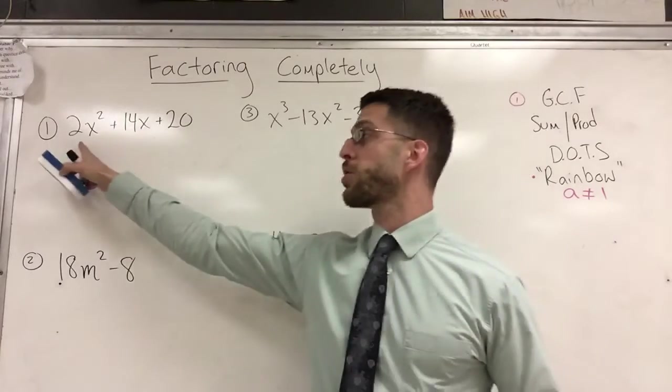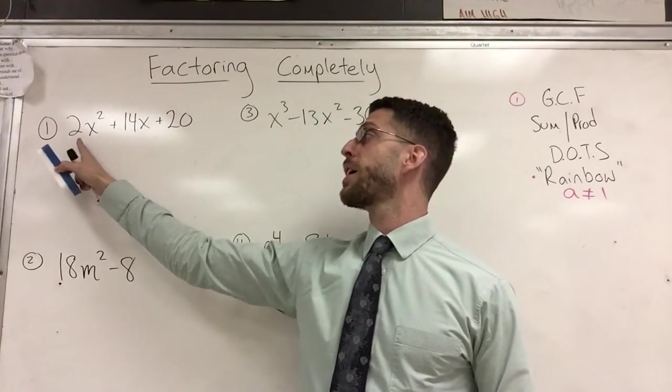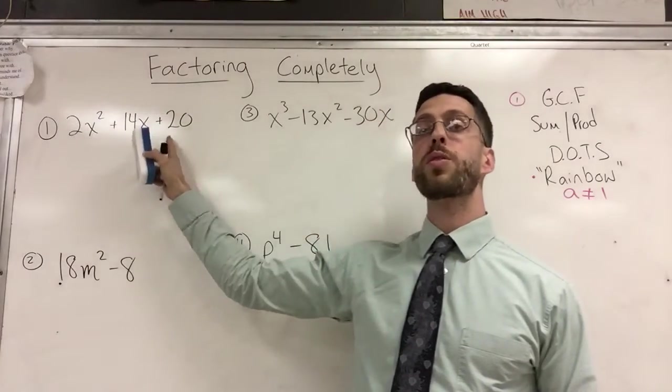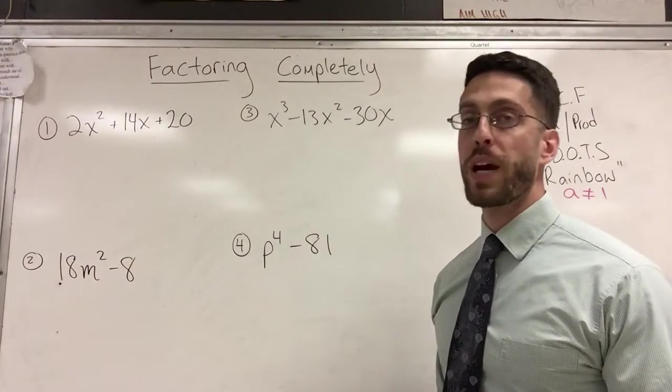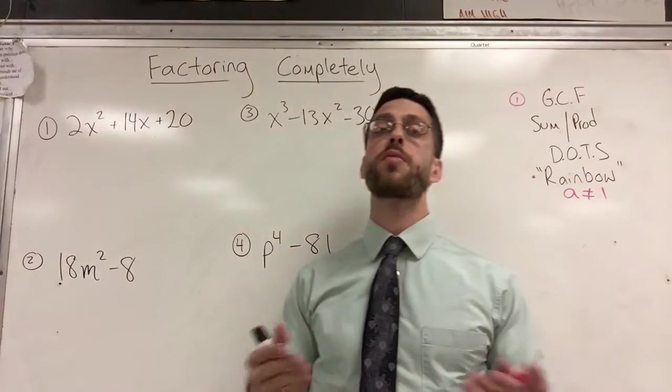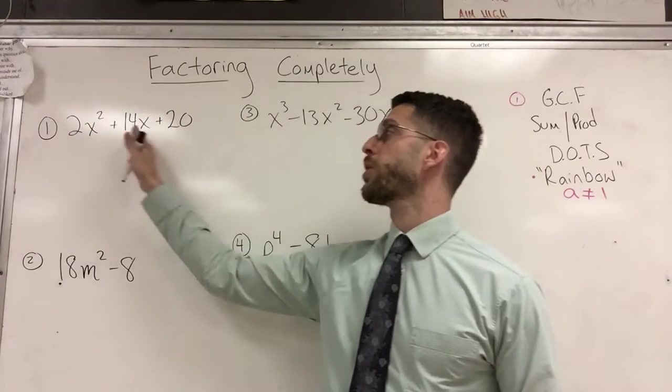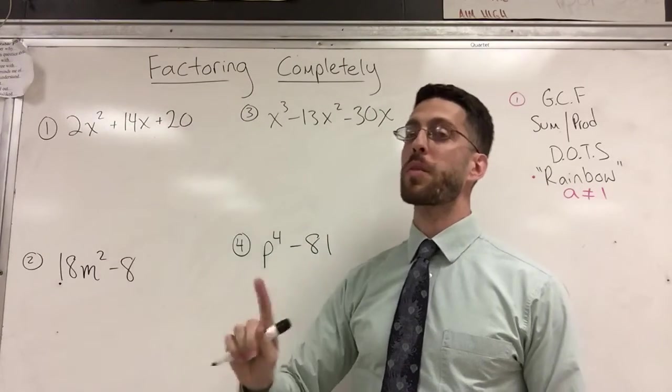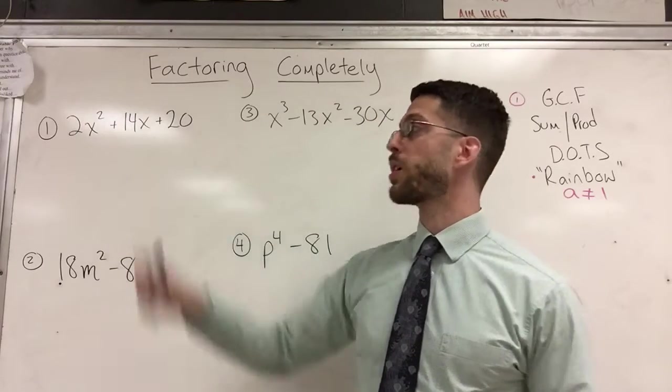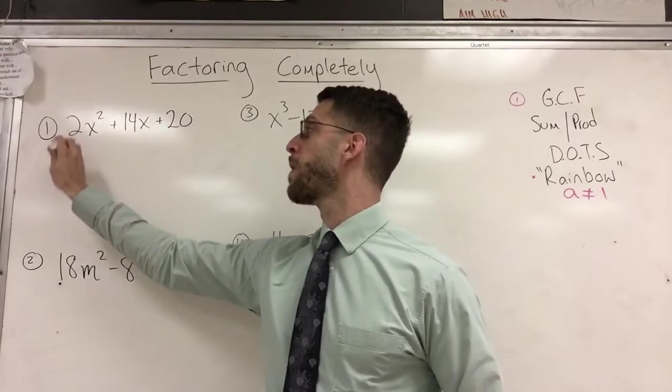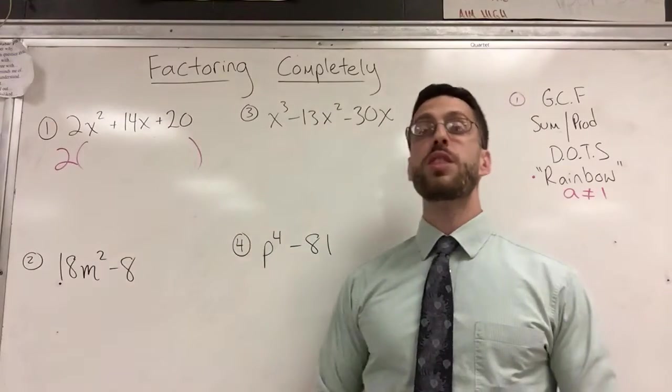So look at the number of the terms: one, two, three different terms. Is there anything that goes into all three terms? And it doesn't have to be a number. People get stuck on the fact that, oh, this is math, I guess it's a number. No, it's algebra. It could be a variable also. But guess what? There's no X in the third term. So it's not going to be a variable. The number two goes into 2, 14, and 20. So the number two is my GCF.